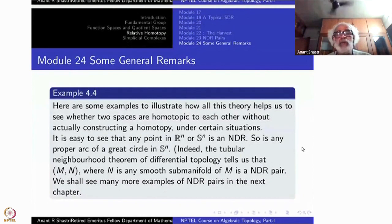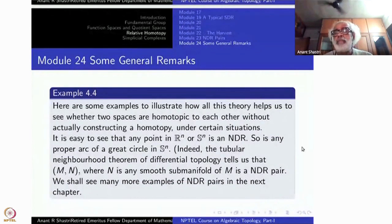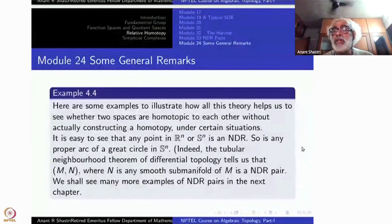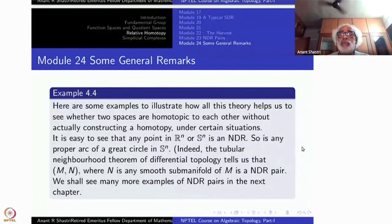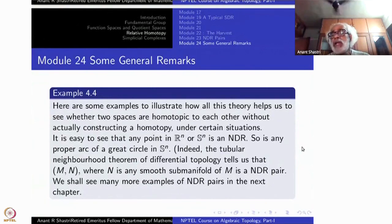To begin with, you take any point in Rn — it is an NDR, a neighborhood deformation retract. The same thing applies to Sn also, once it is established for Rn. What is the meaning of neighborhood deformation retract?